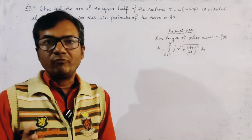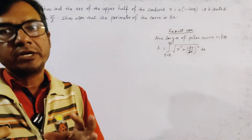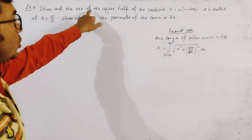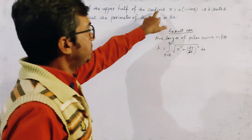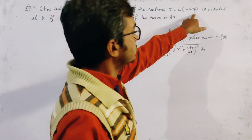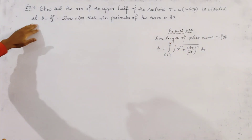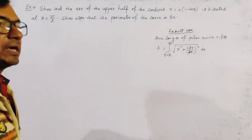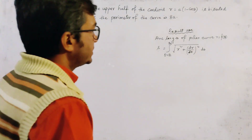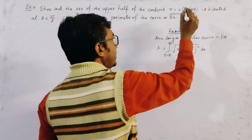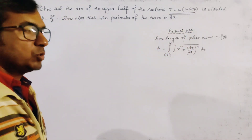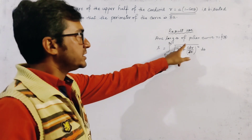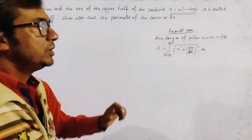This is a class on arc length of a plane curve. The problem is to show that the arc of the upper half of the cardioid given by R = A(1 - cosθ) is bisected at θ = 2π/3, and also to show that the perimeter of the curve is 8A. Since this is a polar curve, we write the arc length formula: S = ∫[θ₁ to θ₂] √(R² + (dR/dθ)²) dθ.